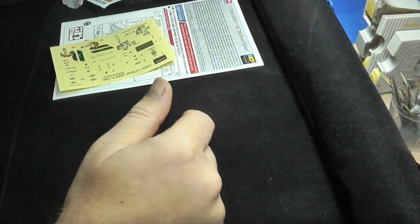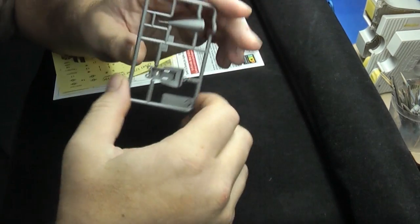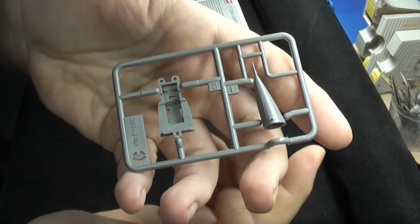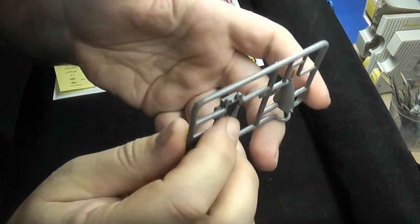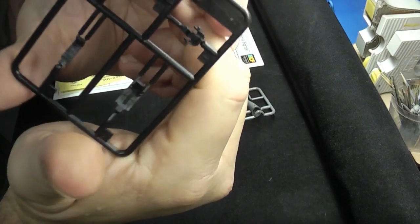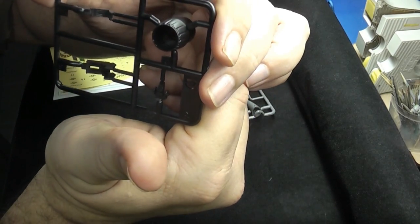So basically, that's only two sprues, and then you get a little, that's the nose, it just clips on, and that's the cockpit tub, and then we get the nozzle, which just slips in.